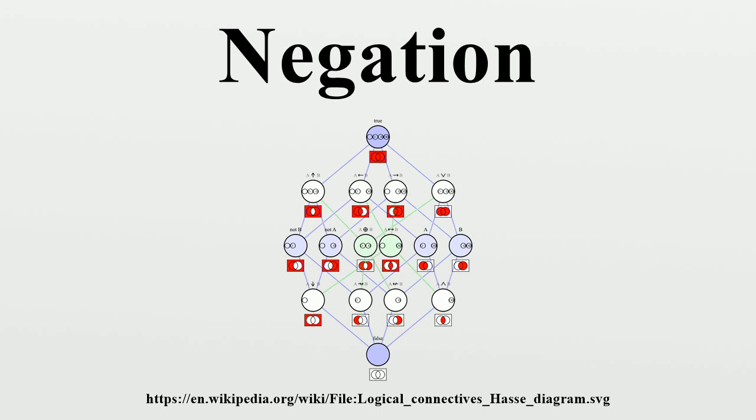Properties: Double negation. Within a system of classical logic, double negation, that is, the negation of the negation of a proposition P, is logically equivalent to P. Expressed in symbolic terms, not not P is equivalent to P.